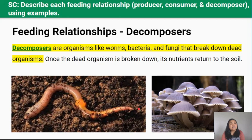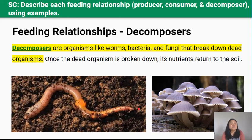The last feeding relationship we're going to talk about are decomposers. Decomposers are animals like worms, bacteria, and fungi like mushrooms that break down dead organisms. After organisms are decomposed or broken down by bacteria and fungi, the nutrients from these dead plants are returned to the soil. Plants absorb these nutrients through their roots. And that's the circle of life.